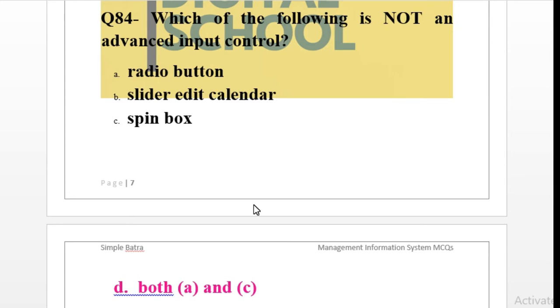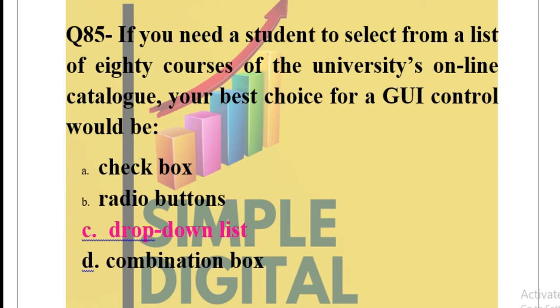Question number 85: If you need a student to select from a list of 80 courses of a university's online catalog, your best choice for the GUI control would be. Here the situation is given: a student has to choose one of the course from the 80 courses. If we are creating a graphical user interface for that system, then the best input choice from the student would be: check box, radio buttons, drop-down list, or combination box.